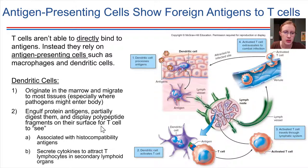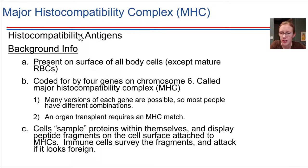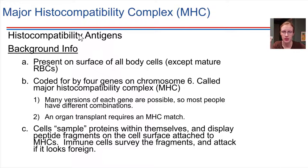The way antigen-presenting cells show fragments to T cells is through the action of histocompatibility proteins. These are sets of proteins present on all of our cells — except red blood cells — and they are responsible for collecting samples of proteins from inside a cell. The MHC, the major histocompatibility complex, grabs onto that sample, puts it on the surface, and it acts like a flag that the immune system can recognize.